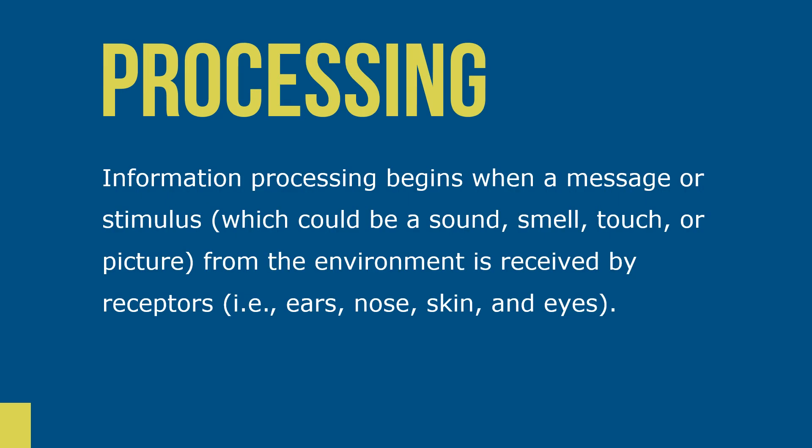Information processing begins when a message or stimulus, which could be a sound, smell, touch, or picture from the environment, is received by receptors like ears, nose, skin, or the eyes. The message is registered in the senses and stored in short-term memory, and then it's transferred or coded for storage in long-term memory.